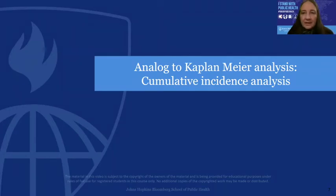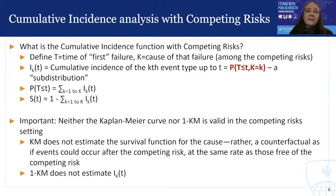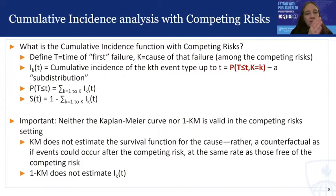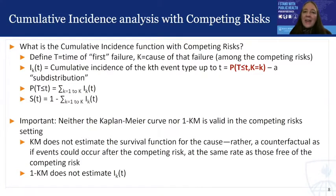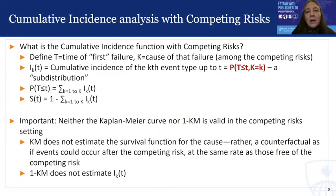Let's begin with cumulative incidence analysis. We must carefully define what the cumulative incidence function is with competing risks — it's not what people often carelessly define based on regular survival analysis. We define T as the time to the first failure among all competing possibilities, and K as the cause of that first failure. The cumulative incidence function I sub K up to time T is then defined as the probability of failure at or before T due to cause k.